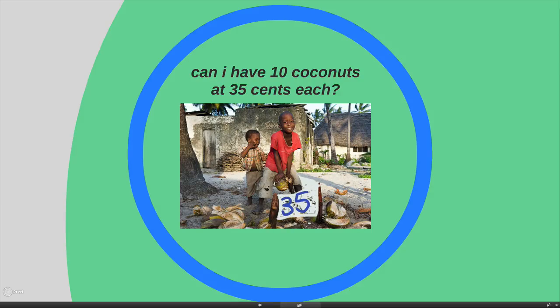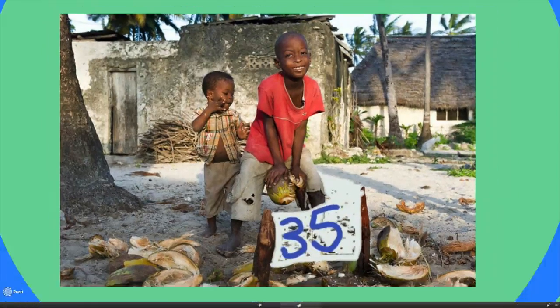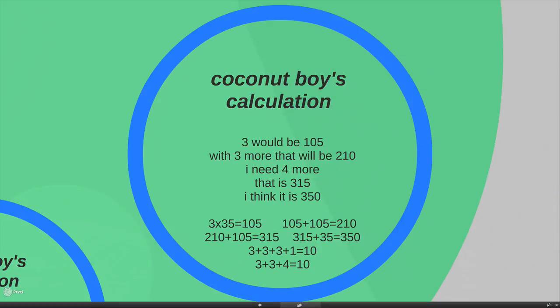She said to him, can I have 10 coconuts at 35 cents each? Something about that is mathematics. He's going to have to do a calculation to work out how much 10 coconuts cost. It was very interesting to see how the boy actually went about tackling this problem. Let's take a look at it and see how he did it.